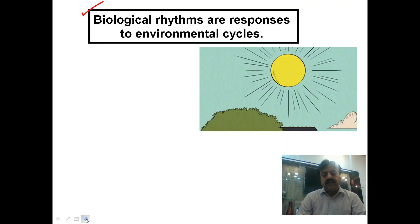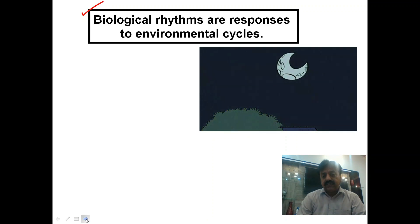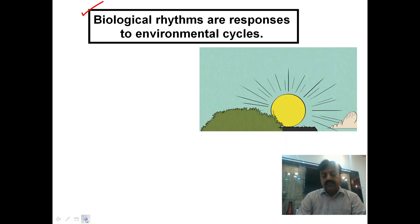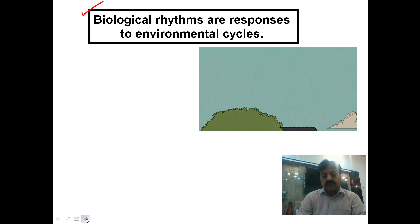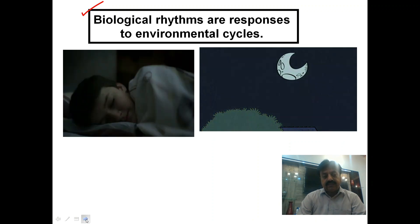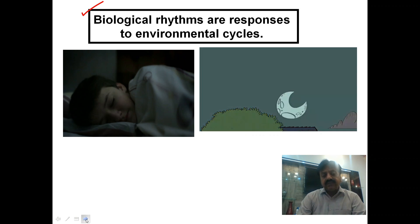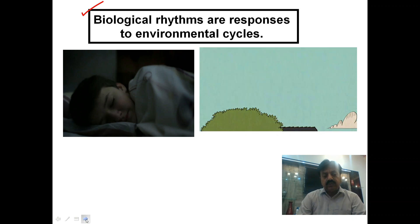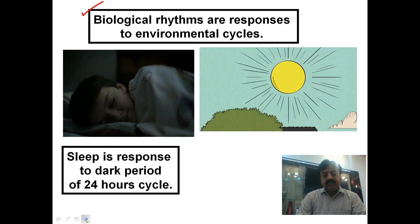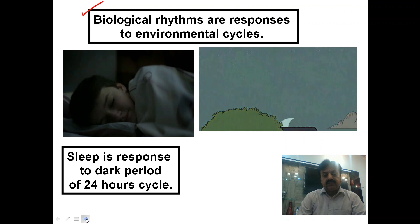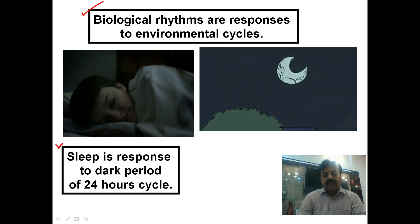For example, there is a day and night cycle — a cycle that repeats every 24 hours. Sleep is a response to the dark period of the 24-hour cycle.